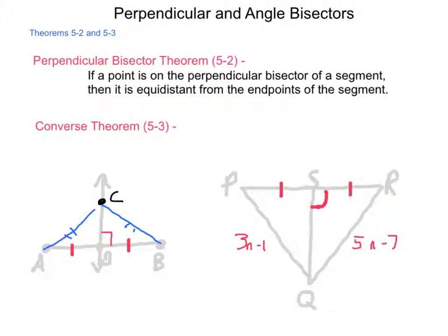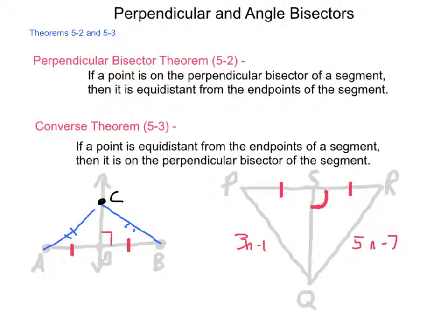Now, theorem 5-3 is the converse of theorem 5-2, so it states: if a point is equidistant from the endpoints of a segment, then it's on the perpendicular bisector of the segment.